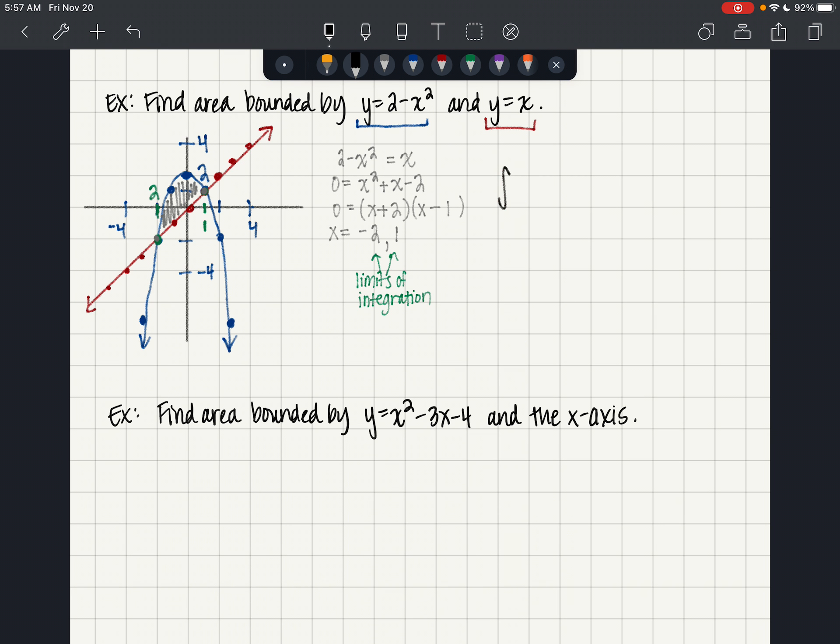Therefore, our integral from negative 2 to positive 1 of 2 minus x squared. The first function is 2 minus x squared. We're going to subtract out the second function, x dx. So this example I'm going to show you using one integral. This is the same thing as the integral from negative 2 to 1 of 2 minus x squared dx minus the integral from negative 2 to 1 of x dx.